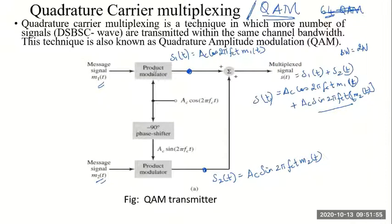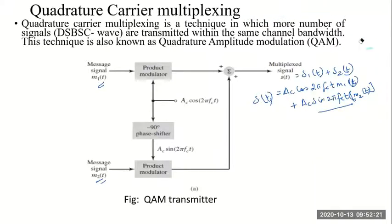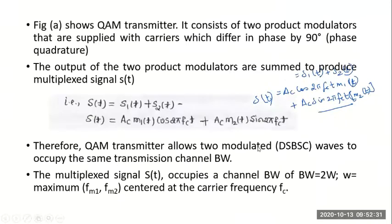This is a simple DSBSC generator arrangement. The upper is the in-phase channel and the lower is the quadrature channel. The upper one generates a DSBSC signal with cosine carrier, the lower one generates a DSBSC signal with sine carrier, both are added and sent on the transmission line. At the receiver, we use two coherent detectors. Let us move on to the receiver side.